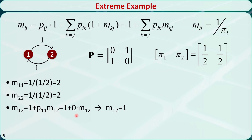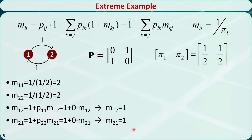m12 is equal to 1. If we are currently in state 1, it will take on average 1 transition to first reach state 2. m21 is equal to 1. If we are currently in state 2, it will take on average 1 transition to first reach state 1. That is how to calculate the mean first passage time.